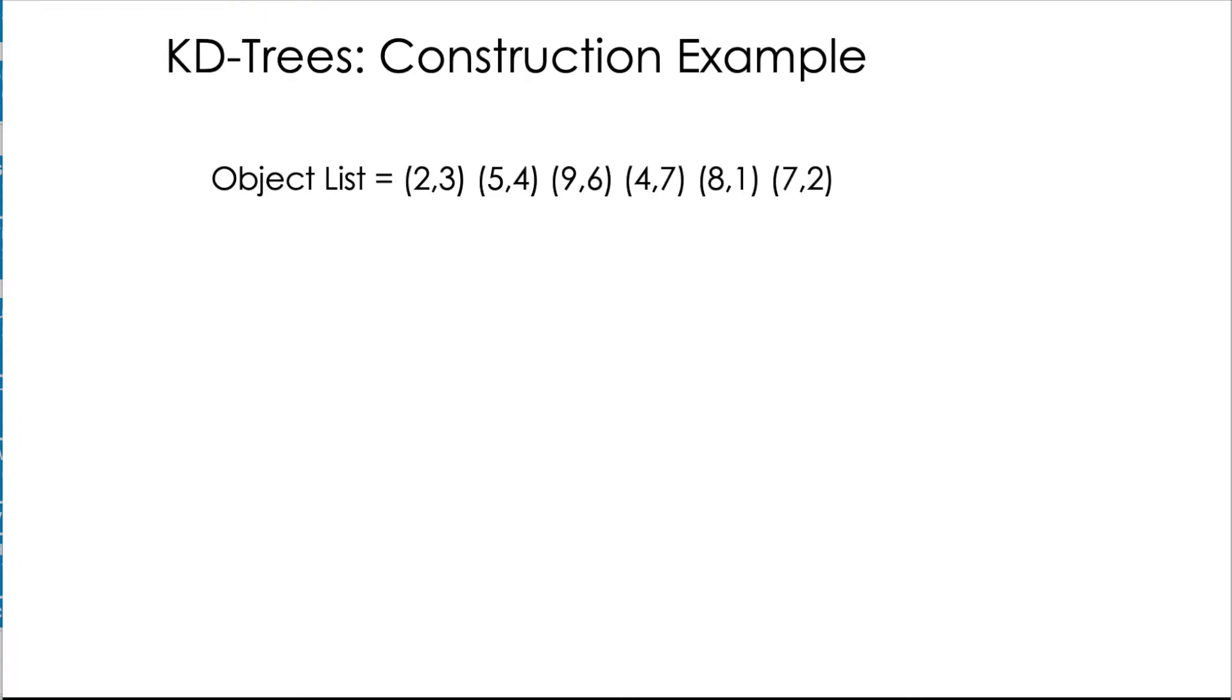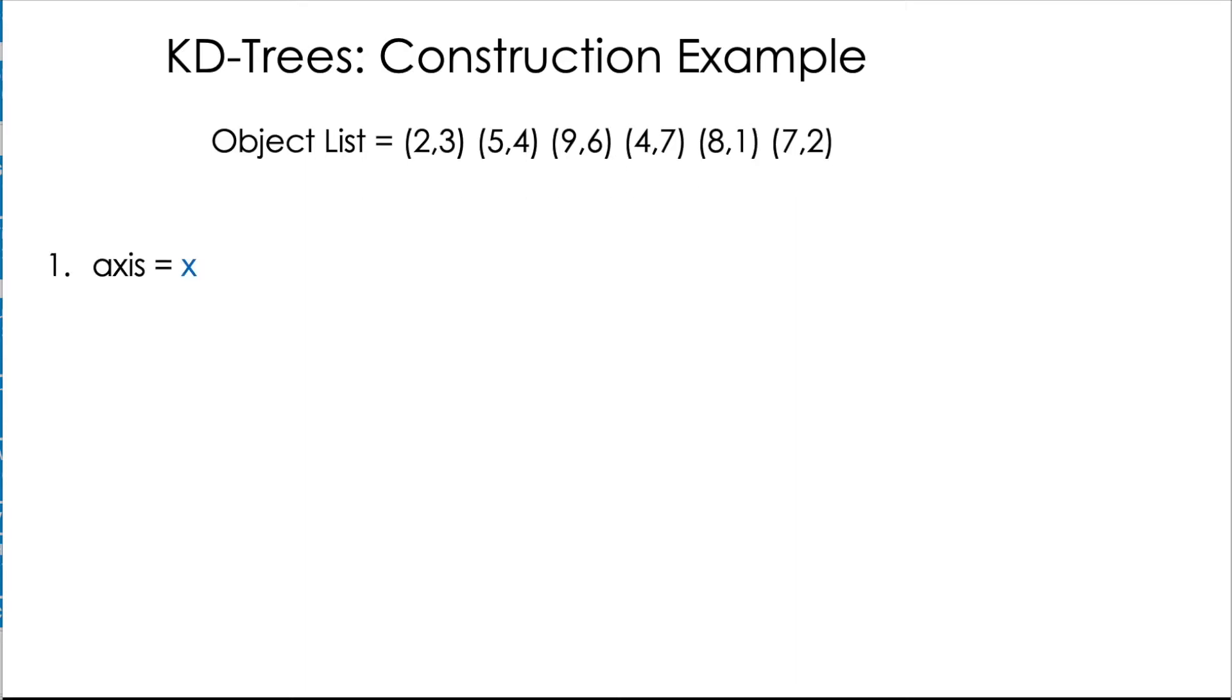Let's see an example. Assume we have this list of data points. So we first choose the axis x. Then we sort our data points according to x. So we realize that is first 2,3, 4,7 and so on. So we are sorting according to the first element of our data points, because our axis is x.